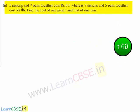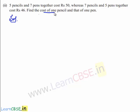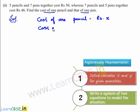Coming to the second bit: 5 pencils and 7 pens together cost 50 rupees whereas 7 pencils and 5 pens together cost 46 rupees. Find the cost of 1 pencil and that of 1 pen. Let us see the solution of this problem. In this problem, we are required to find the cost of 1 pencil and the cost of 1 pen. So let us assume cost of 1 pencil is equal to x rupees and cost of 1 pen is equal to y rupees.